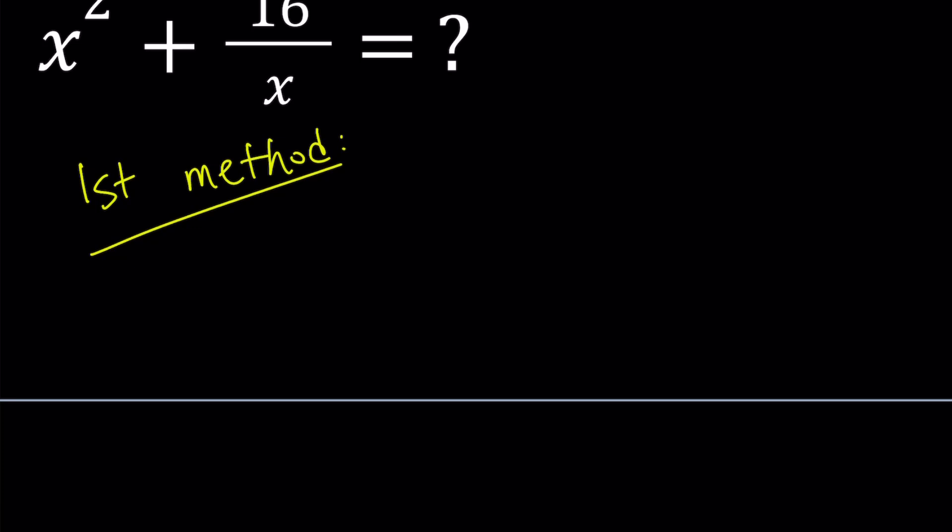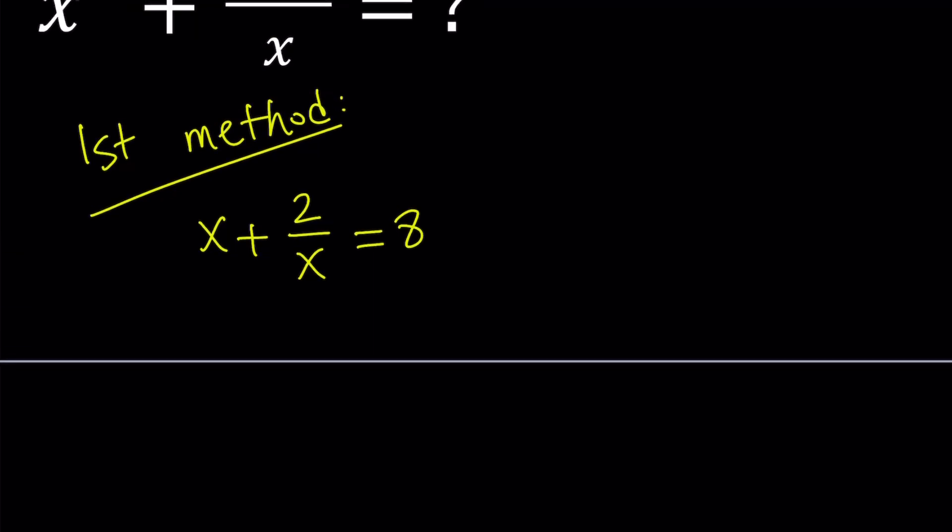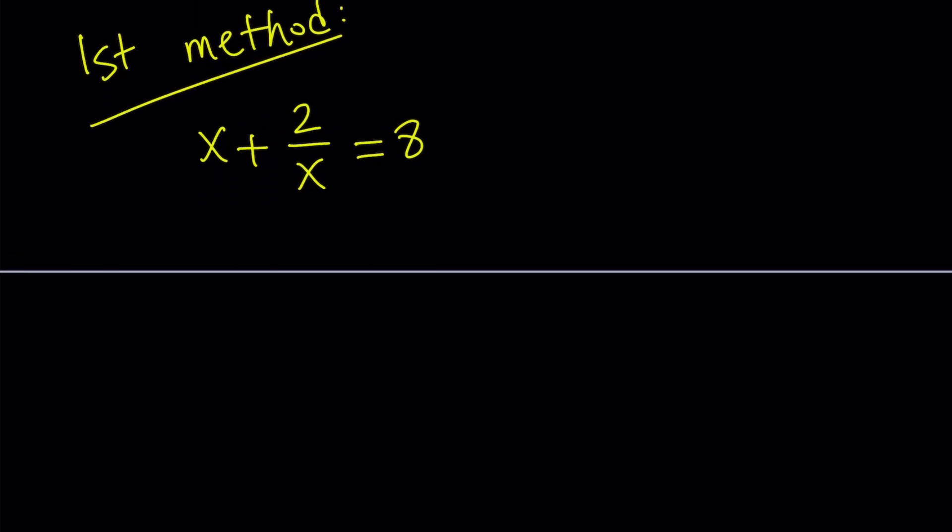So for the first method, I'm going to do the following. First of all, we're given an equation, right? So why not solve it? That's my idea. x plus 2 over x is equal to 8. And this is actually an easy to solve equation. Let's multiply everything by x. We get x squared plus 2 equals 8x. And I put 8x on the left. By subtracting, you'll get x squared minus 8x plus 2 equals 0.